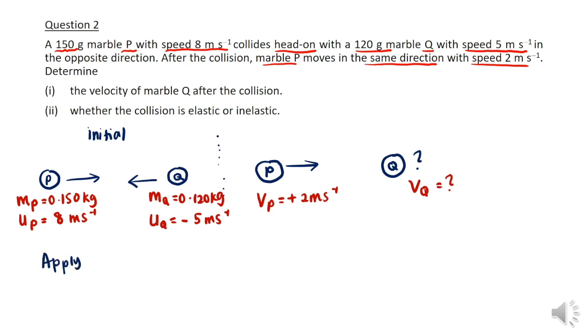We apply the principle of conservation of momentum to solve this type of question. The principle states that P initial must equal P final for a system. We write MP times UP plus MQ times UQ for initial momentum, and MP times VP plus MQ times VQ for the final momentum.